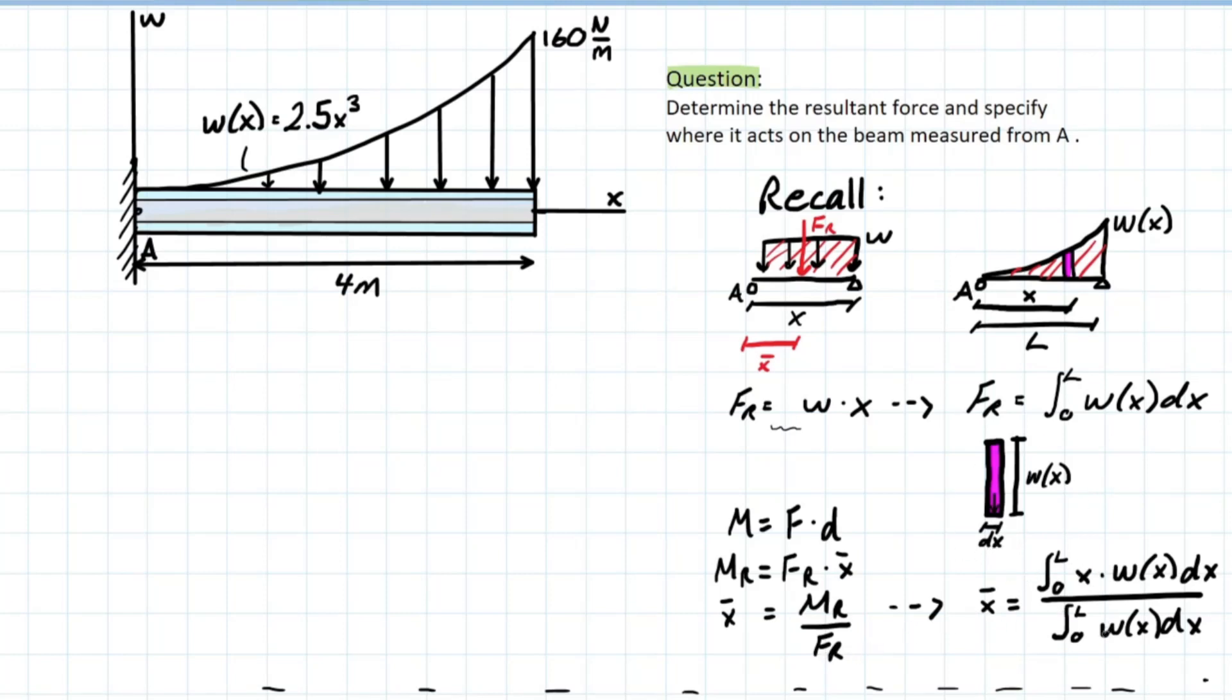We know fr because we already have it up here, right? And we know mr is going to be fr times x bar, right? We don't have x bar yet though. But if we consider that each of these segments that we cut out has fr acting right in the middle of that segment, we can consider the distance x for all of these different segments.